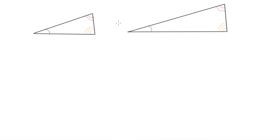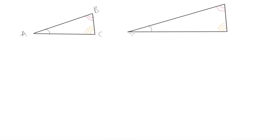Another thing we have to have when looking at similar triangles is that the sides of our triangles are scaled versions of one another, and they are all scaled by the same factor. Let's look at that in a little more detail and start by labeling these two triangles — this one ABC and this one DEF.